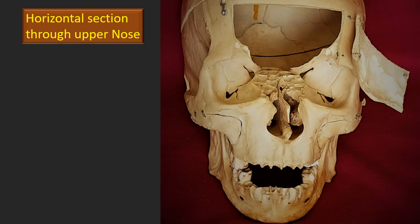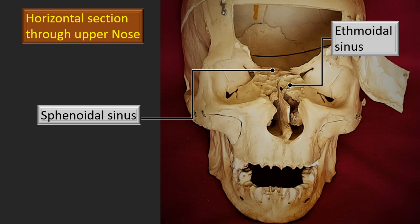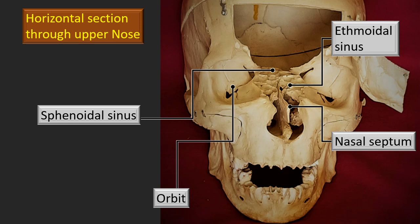This is a horizontal section of the dry skull roughly through the upper nose. You can see the ethmoid and the sphenoid sinus. Let's put up the labels to identify them. That's the ethmoid sinus and behind that is the sphenoid sinus. For reference, here also there is a nasal septum. That's the orbit on either sides of the ethmoid sinus. That gives you a rough relation to the sphenoid — the apex of the orbit is closely related to the sphenoid bone.